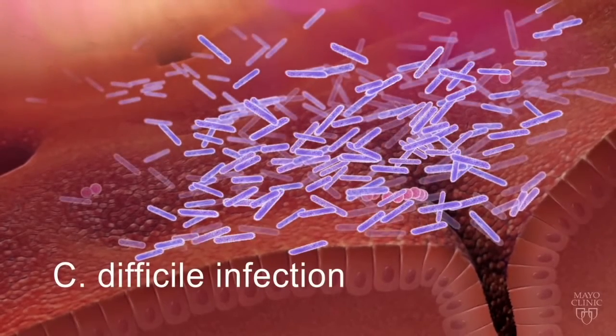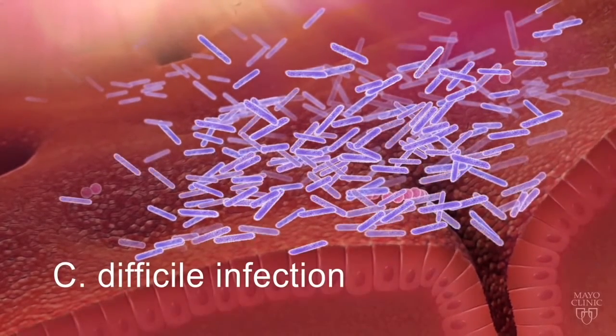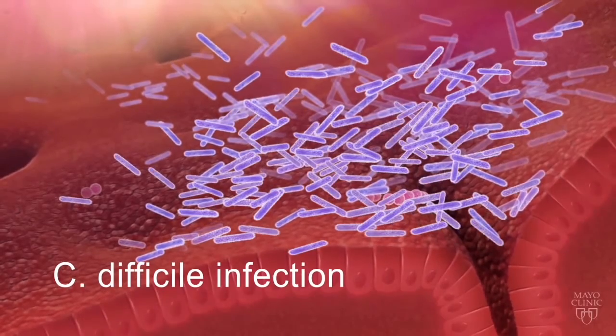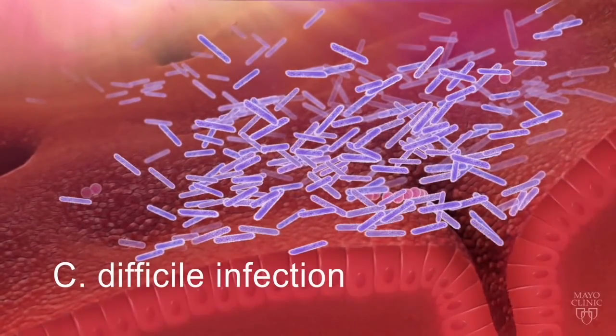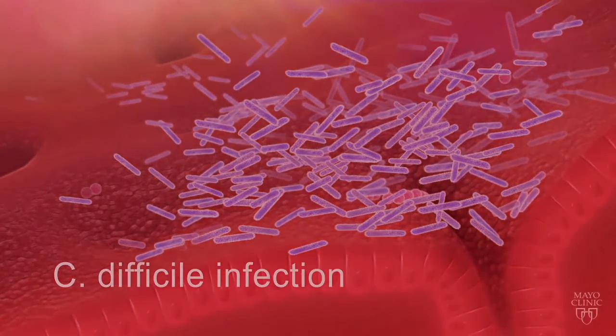For example, one type of bacteria can cause a colon infection when the microbiome has been disrupted. Uncontrolled, it can cause severe tissue damage and death.